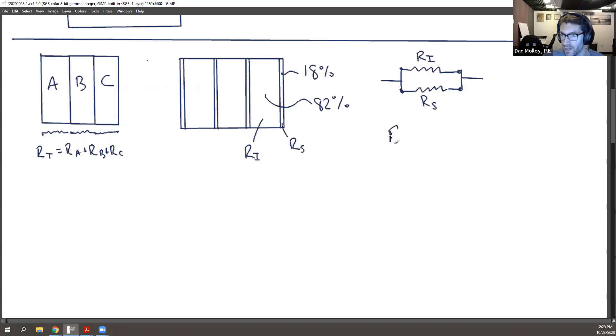So how do we add resistances in parallel? The total now, you have to take one over the sum of the reciprocal.